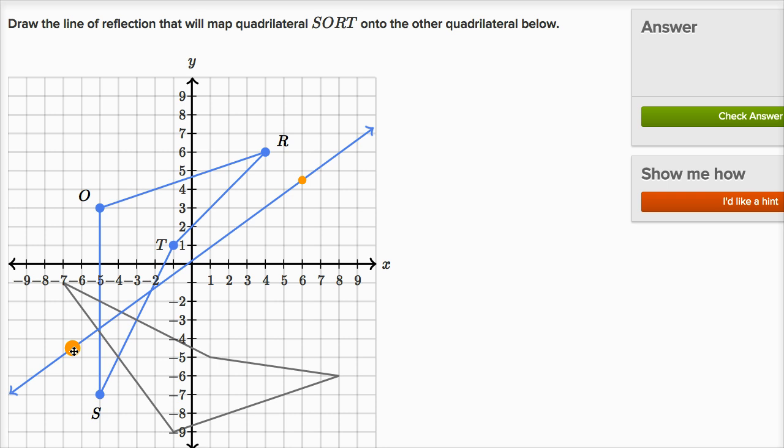And the way I could tackle this, I could look at corresponding points. I could say, look, point S right over here, in the image after the reflection, the corresponding point is that right over there. And so the line of reflection should contain a point that is halfway between these two points. And so what's a point that's halfway between them? Well, let's see, where I have it right now isn't halfway. If I put it there, that actually looks halfway between this point and the corresponding point in the image.